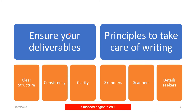Ensure your deliverables have three qualities. First, clear structure — because it makes your writing easy to interpret. Second, consistency — because you look reliable by using a similar structure, style, tone, and approach. Third, clarity — because it enables understanding of outcomes and actions. The principle to take care of in your writing involves three types of readers: schemers, scanners, and detail seekers. Schemers require you to craft and scheme your writing appropriately to catch any errors.